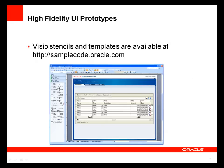If you are using Microsoft Visio for prototyping, you can achieve a much higher fidelity result by using a set of over 40 Visio stencils and a template based on the ADF Faces components. You can download the stencils from samplecode.oracle.com — just click on the JDeveloper and ADF section. The stencils allow you to build a prototype in Visio that looks like a screenshot using the layout, look and feel, and the default shapes and sizes of real ADF Faces components.